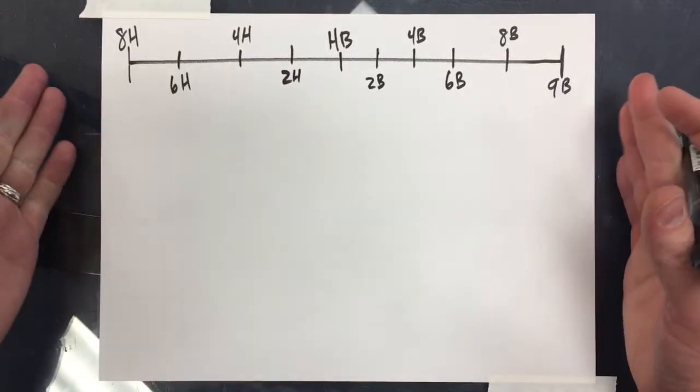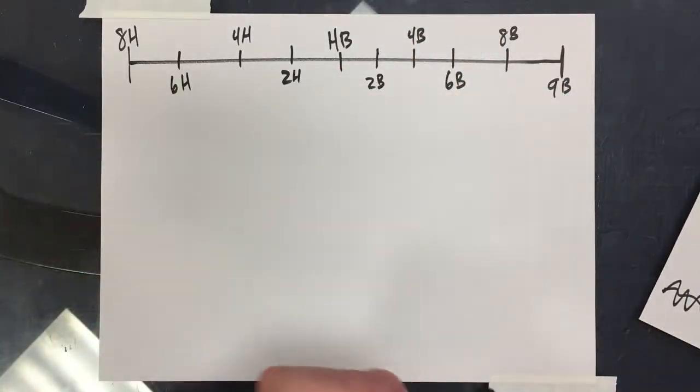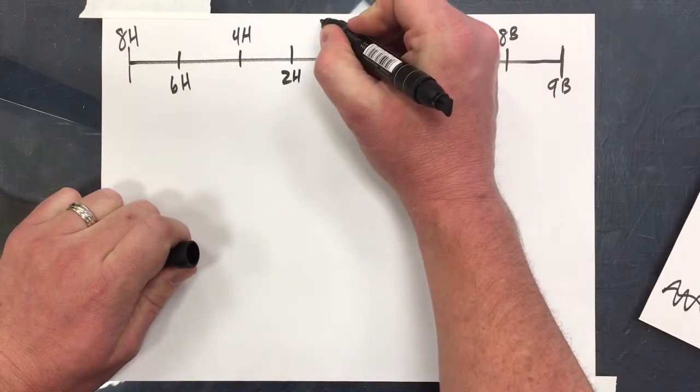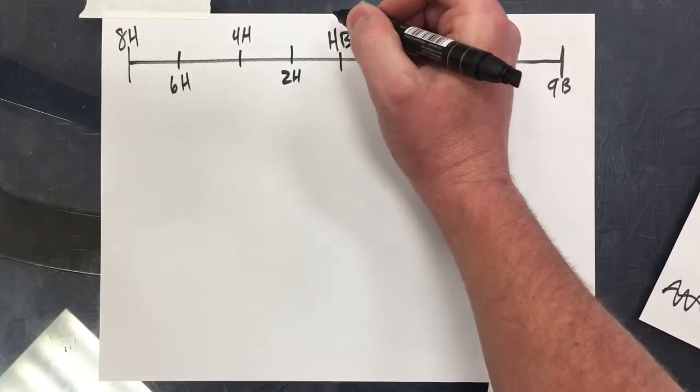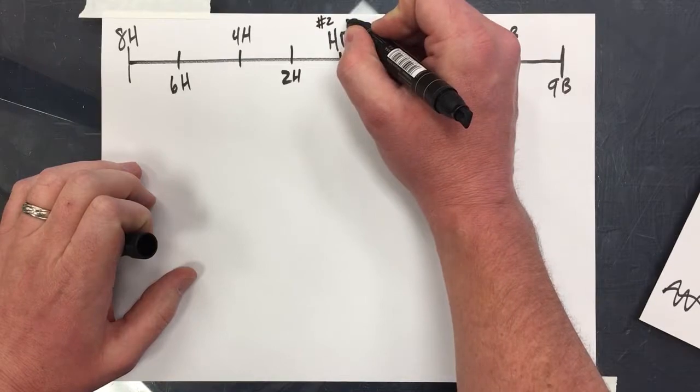Okay, ta-da, just like that, got them all labeled out here. You've seen possibly sets of pencils that have a whole variety of things going on, anywhere from HB—this is like a number two pencil that you'd use to take a test with.